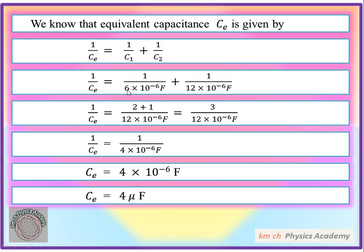Substituting values: 1/Ce = 1/(6×10⁻⁶) + 1/(12×10⁻⁶). Taking LCM as 12×10⁻⁶, we get: 1/Ce = 2/(12×10⁻⁶) + 1/(12×10⁻⁶) = 3/(12×10⁻⁶). Dividing 12 by 3 gives 4, so 1/Ce = 1/(4×10⁻⁶ F).